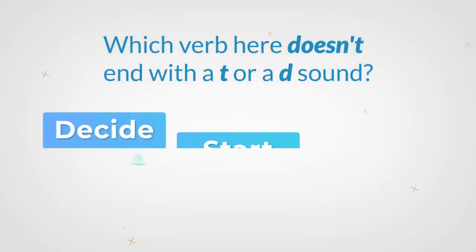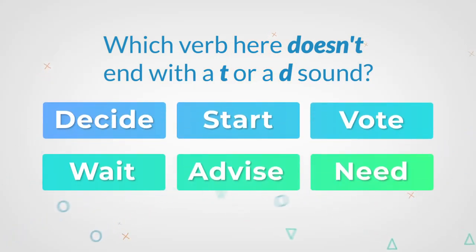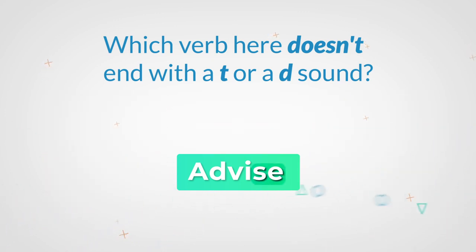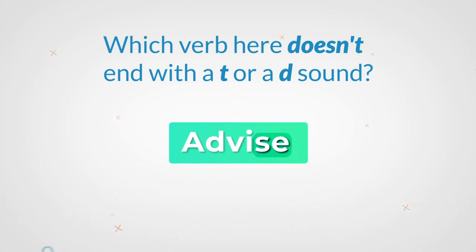With that in mind, which verb here doesn't end in a T or a D sound? An important thing to keep in mind is that when we talk about phonetics or pronunciation, you should trust your ears more than your eyes. Even though the words 'decide' and 'vote' end in a vowel when you look at the spelling, the actual sound you hear is a D and a T respectively. So they're pronounced as 'decided' and 'voted'. We say 'started', 'waited', 'needed'.